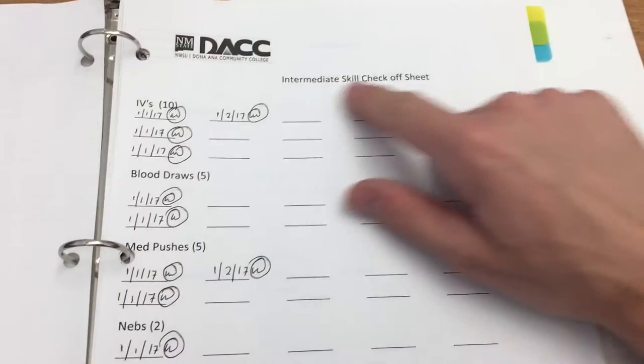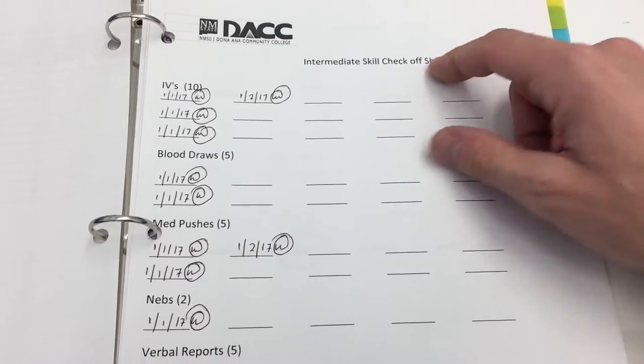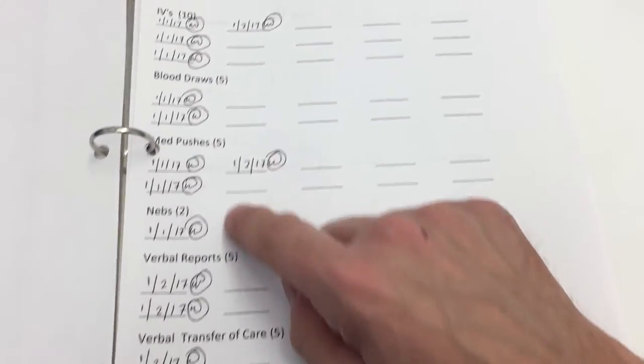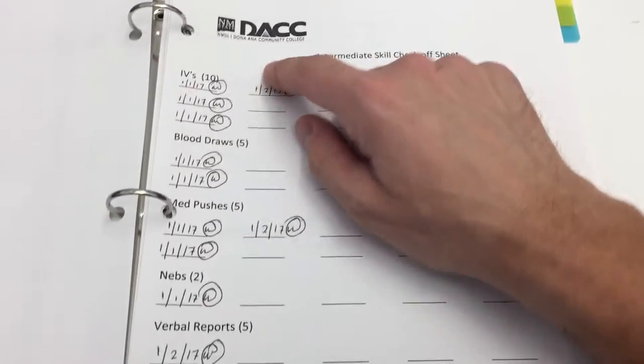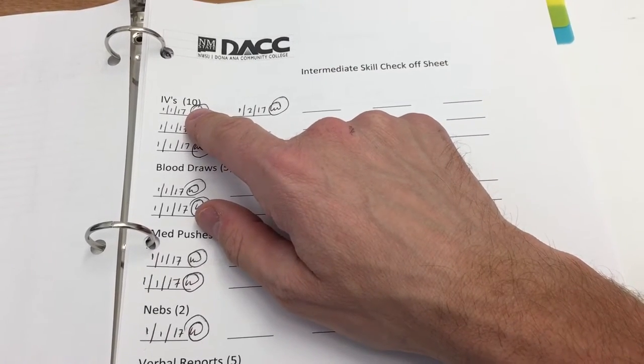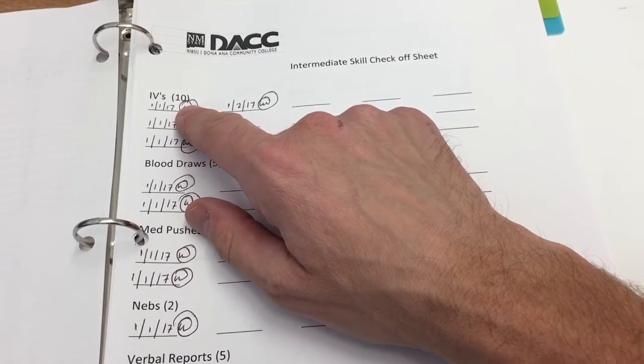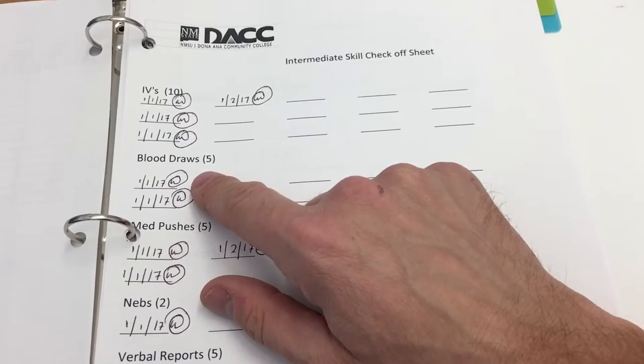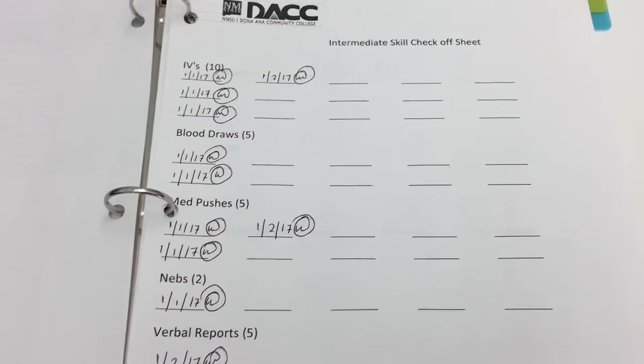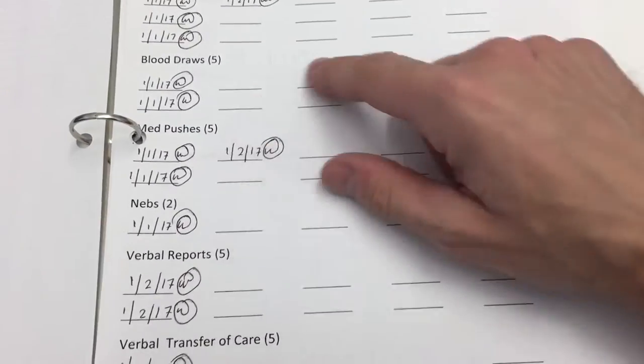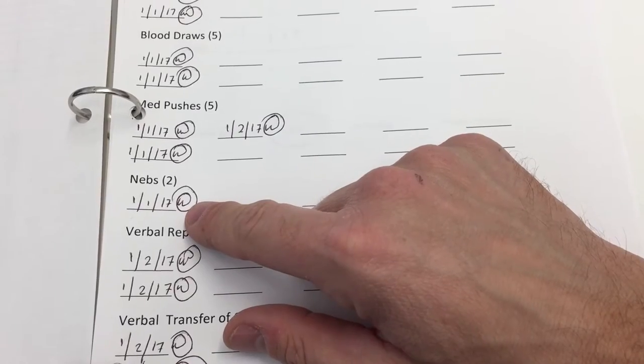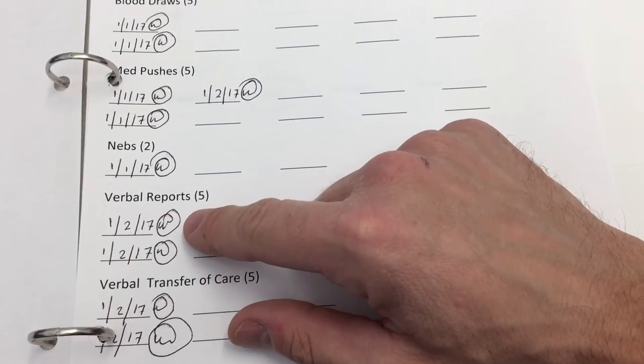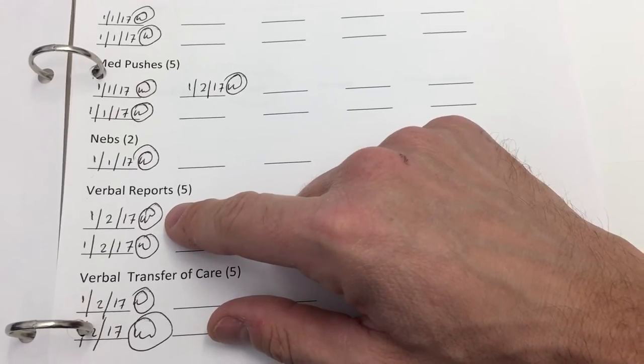The second one is the skill checkoff sheet. So these are some of your skills that you have. So you have a certain number of IVs, 10 IVs. You have up to five blood draws, five medication pushes, two nebulized medication treatments, five verbal reports.